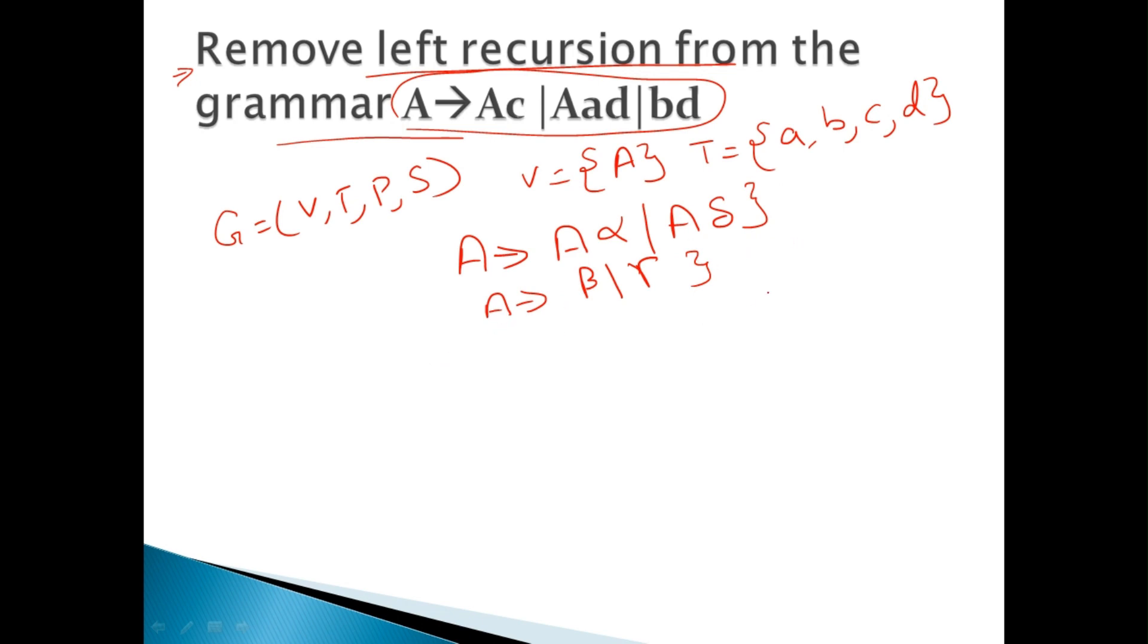Then by introducing a new variable A prime, we have removed this left recursion. How? A is rewritten as beta A dash and gamma A dash. And again, A dash is rewritten as alpha A dash, delta A dash, and epsilon.